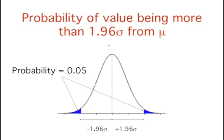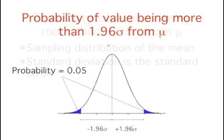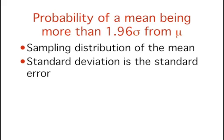Therefore, if we randomly sampled a value from a normal distribution, the probability that it would be more than 1.96 standard deviations from the population mean is 0.05. We are often interested in means rather than single values. Calculations about means are based on the sampling distribution of the mean.